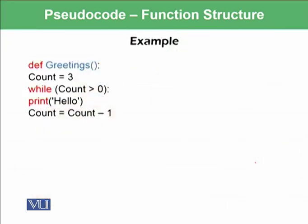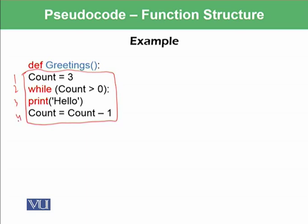So this is an example of representing function structure. For example, we have said def greetings. So this means whatever we will define over here, these four lines, one, two, three, four, all of them will have one name that is greetings. And because we have defined greetings function with the word def, which is a definition keyword to define the functions.